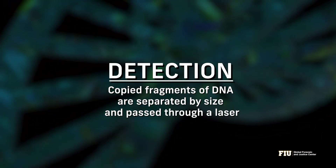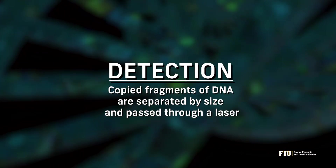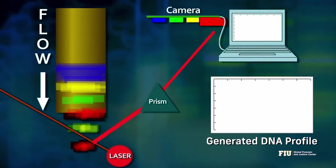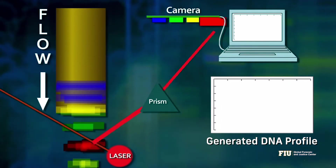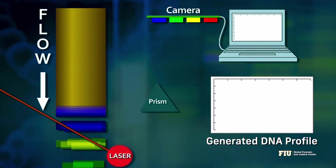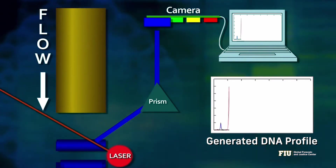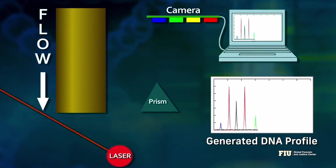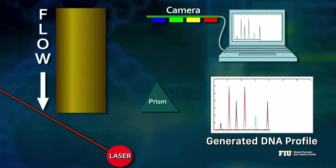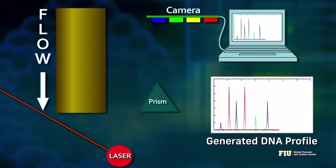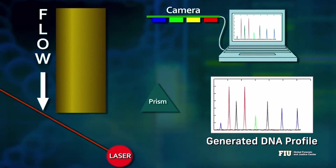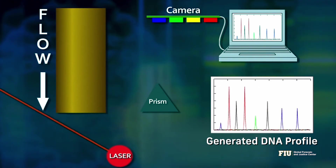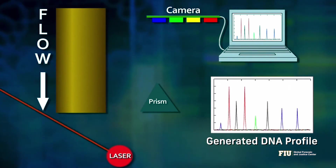We have finally reached the detection process, where the copied fragments of DNA are separated by size and passed through a laser. When this laser hits the fluorescent tags added earlier, they become excited and emit a specific color fluorescence. A camera determines the color of the tag and the intensity of the fluorescence.